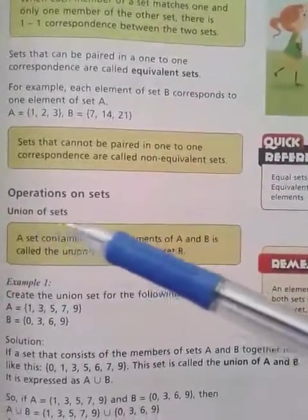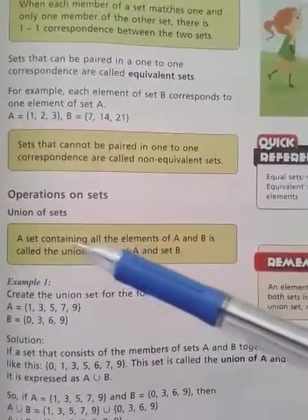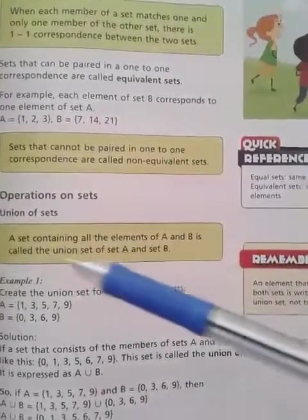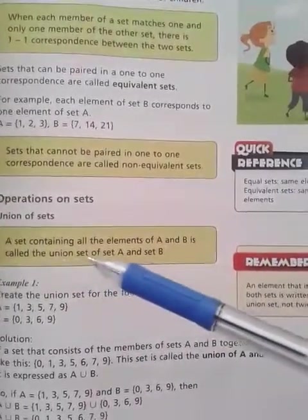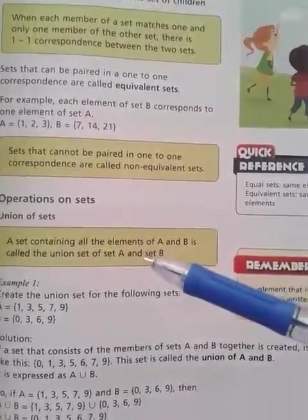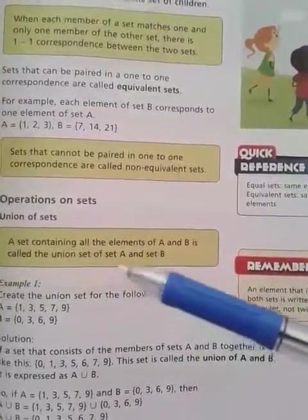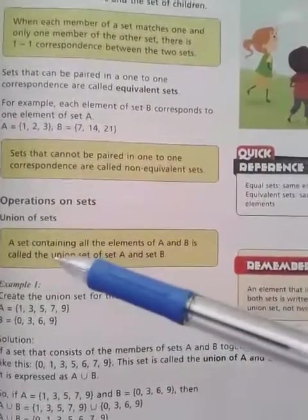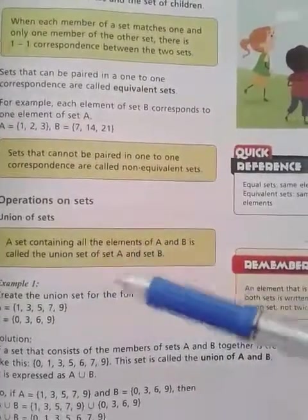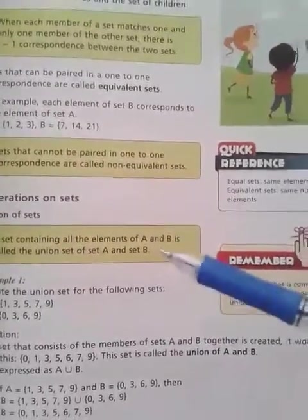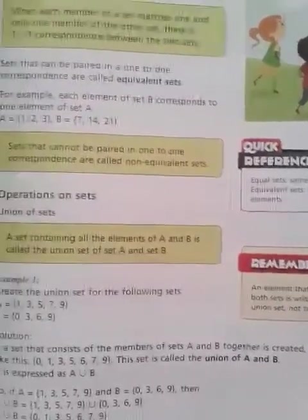Operations on Sets — Union of Sets: A set containing all the elements of A and B is called the union of set A and B. For example, if there is a task where you find the union of two sets, you will combine all the elements of A and B. This is called the union of two sets.